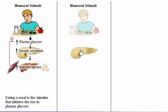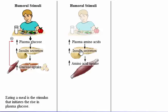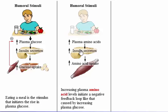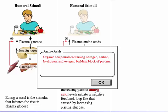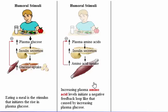When blood glucose is adequate, an increase in plasma concentration of amino acids stimulates pancreatic beta cells to secrete more insulin. Insulin increases the uptake of amino acids into muscle and other cells, causing plasma amino acid levels to return to their pre-feasting values. Increasing plasma amino acid levels initiate a negative feedback loop, like that caused by increasing plasma glucose, which removes the stimulus for secretion of insulin.